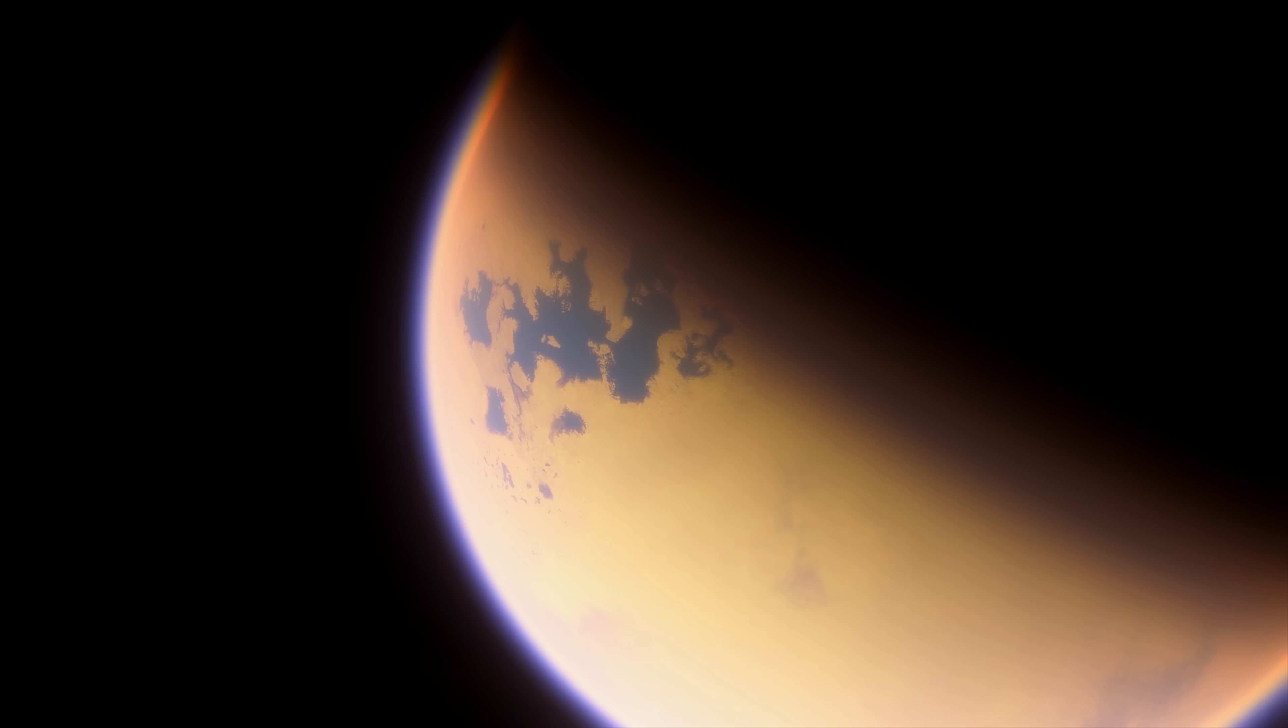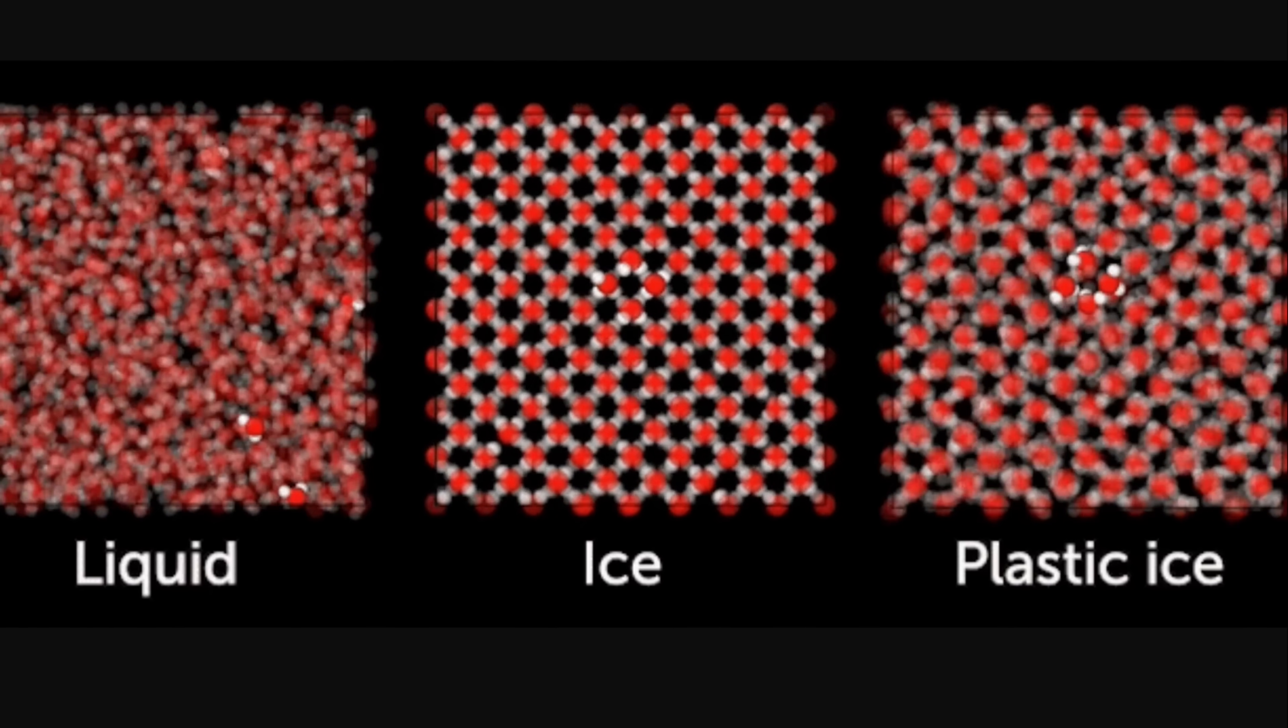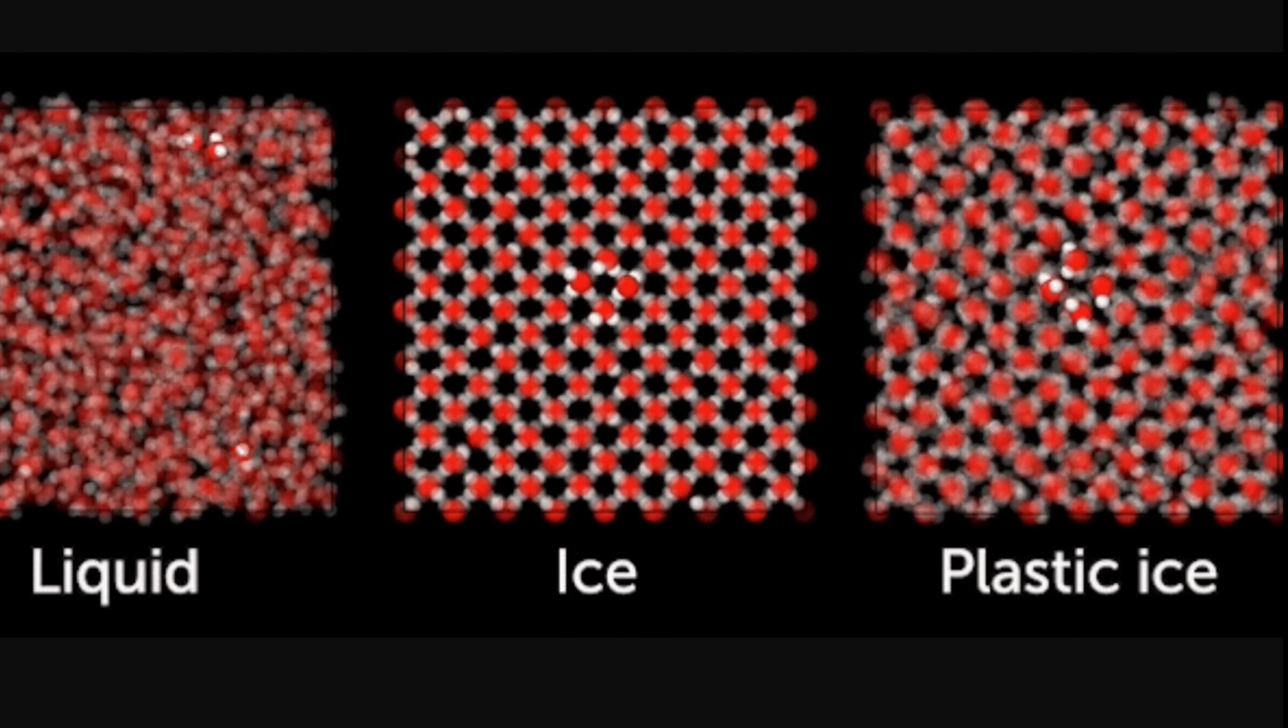Which is actually something we've discussed recently in the Titan video, you can find in the description, because we know that even on the surface it seems to be very malleable because the surface of Titan does not seem to preserve a lot of craters. And though it has been suggested to be some type of amorphous ice, it could actually be this. It could be this plastic ice coming from within this moon.